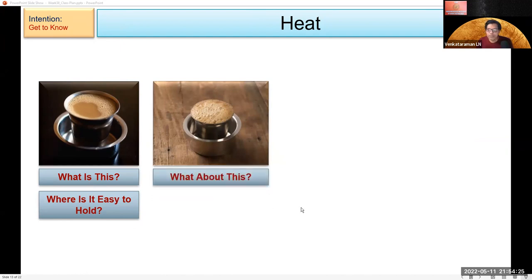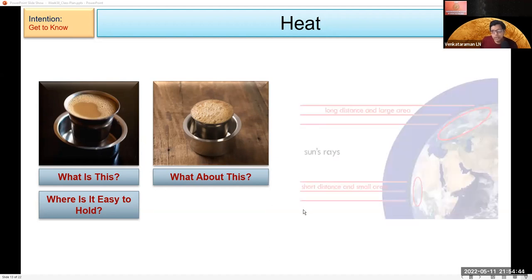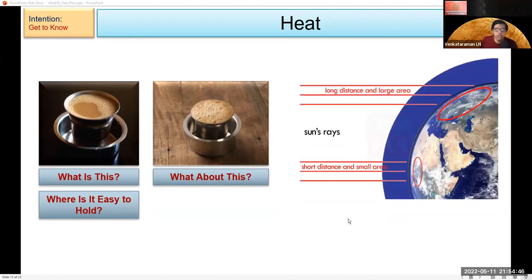So now the question is why was it easier to hold it on the rim than a little bit down? The rim is not that hot. So there is a difference in the heat. That's what you find on Earth. At the equator, the sun rays fall directly and that area is much hotter.